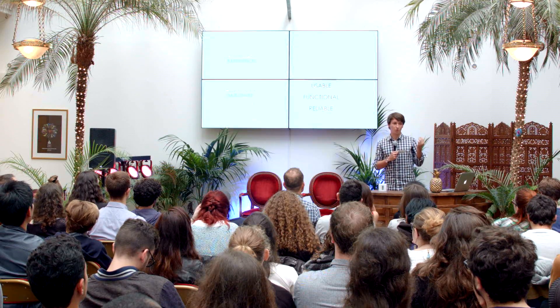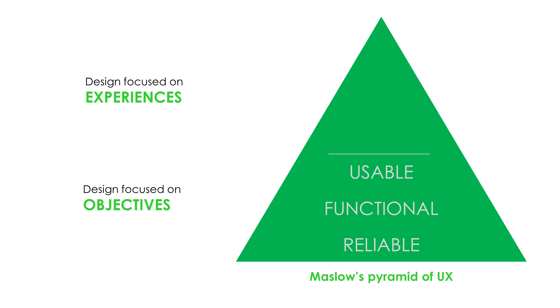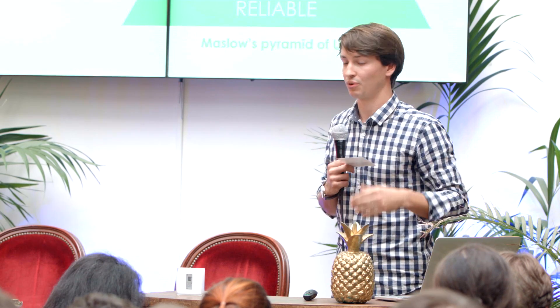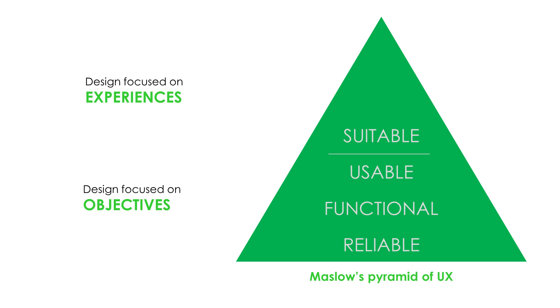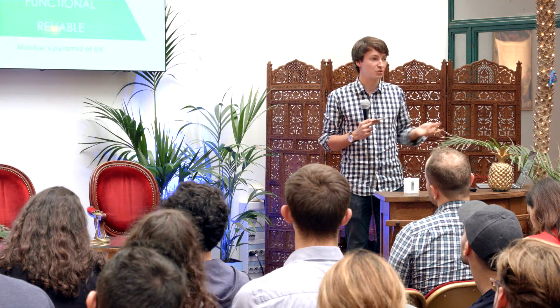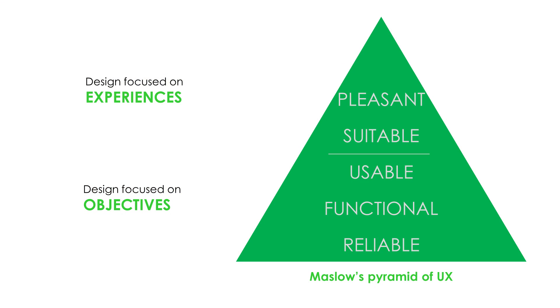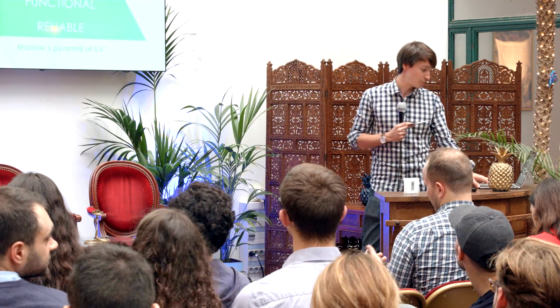When you design a product, you must include design focusing on experiences. Let me introduce the Maslow Pyramid — it's a framework of everything you have to check when designing a product. The most basic steps are for engineers: reliable, functional, usable. But if you also make a product suitable — really easy to use, where you know how to use it without reading a manual — and then pleasant, meaning when you use it you enjoy it and want to use it again, it's much more interesting.